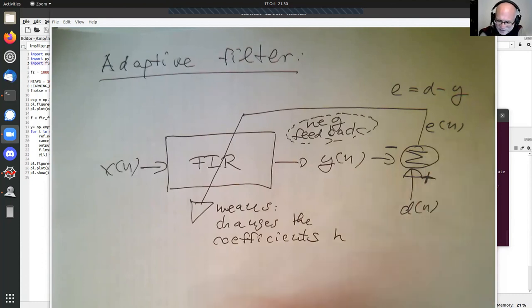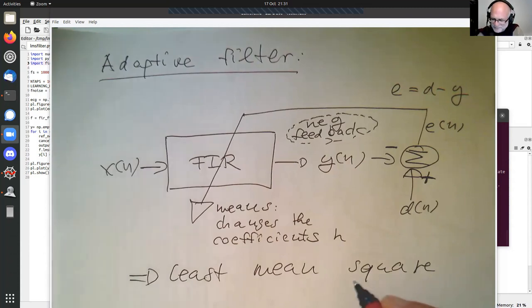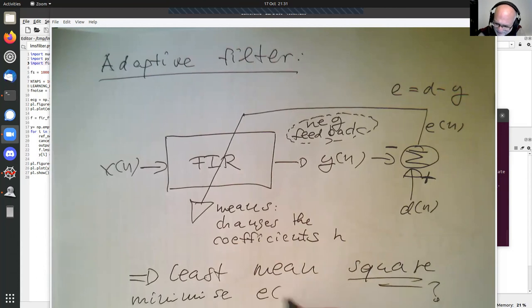And this approach is also called the least mean square filter approach. So why is that square? Because at the end we minimize E of N square. It doesn't matter if it's positive or negative, and that's the reason why it's called least mean square.